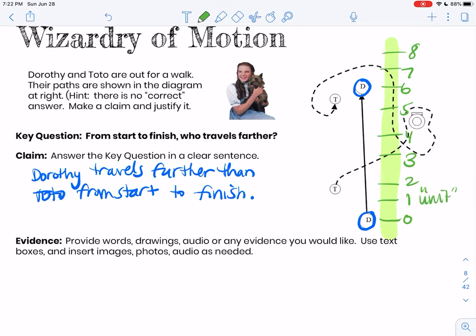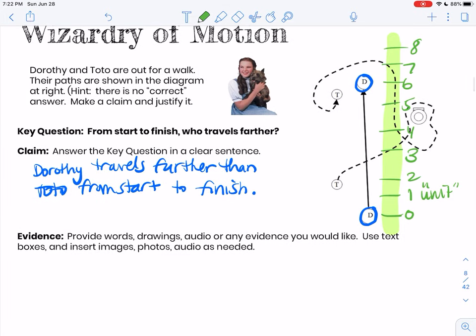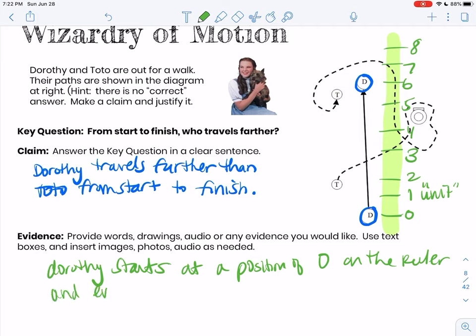Right, if I'm claiming evidence that Dorothy traveled further, I may show some kind of ruler like this. And I would say, well, Dorothy starts at a position of zero on the ruler, and ends at six. So she covered six units.